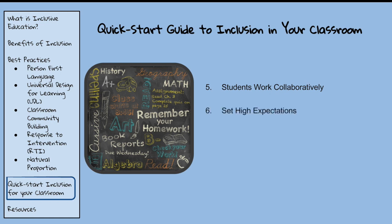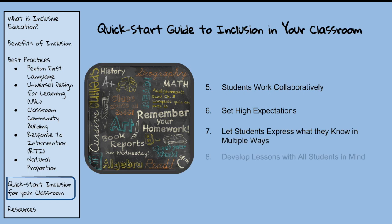Number six, hold all students to high expectations. You want to push them to achieve to their highest abilities. Even if you have to reduce the workload for some students, you can still hold high expectations for them. Number seven, provide a variety of ways for students to express themselves and their knowledge. Students work harder when they have some choice in what they're doing. Number eight, develop lessons with children on both the high end and the low end of academic abilities in mind. Don't build a lesson thinking only of the middle, as this helps give all children opportunities to learn to their highest ability.